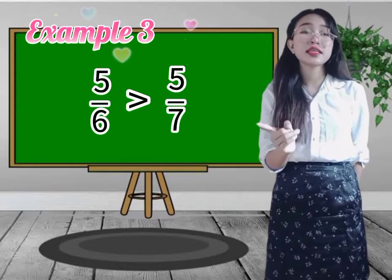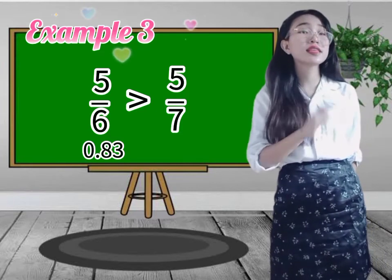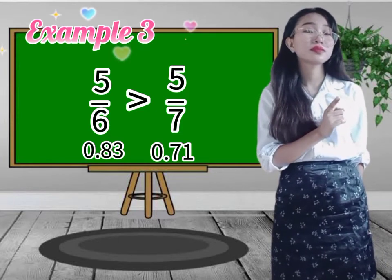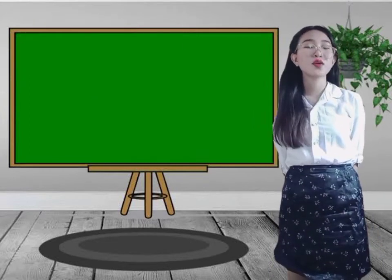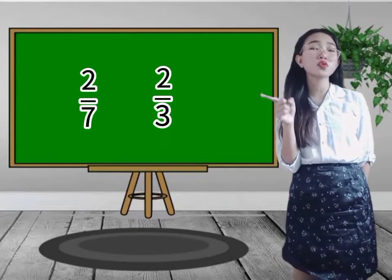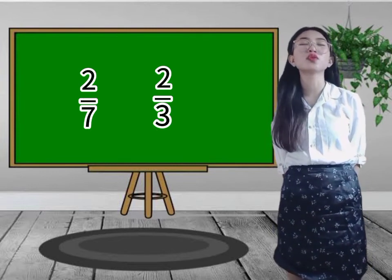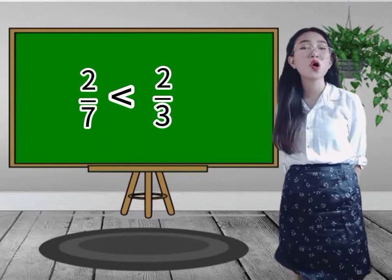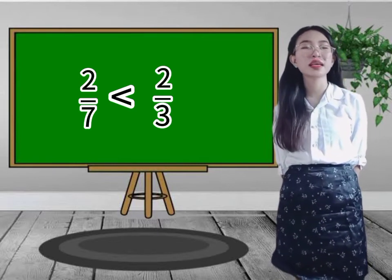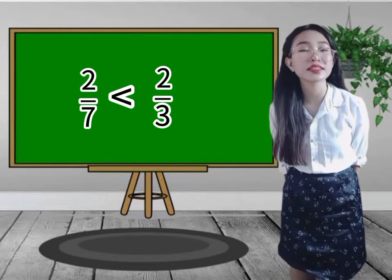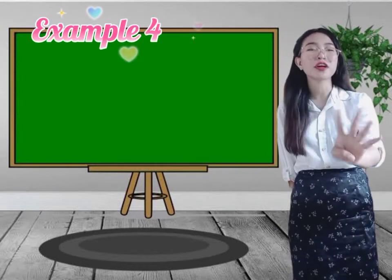Let's check: 5 divided by 6 is equal to — and 5 divided by 7 is equal to. Can you see the difference? Another example — try this one: 2/7 and 2/3. The answer is: 2/7 is less than 2/3.